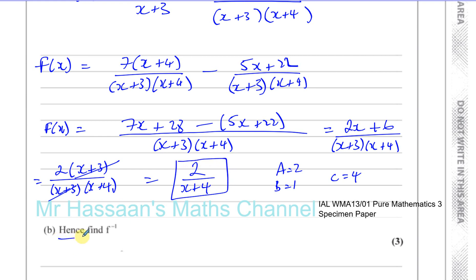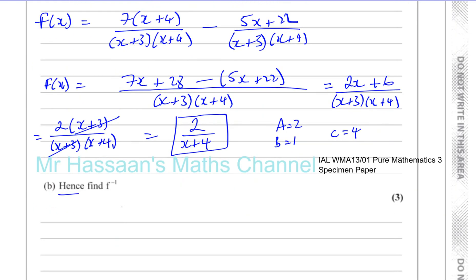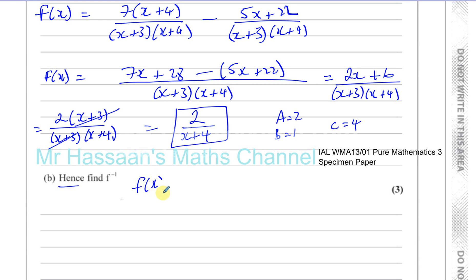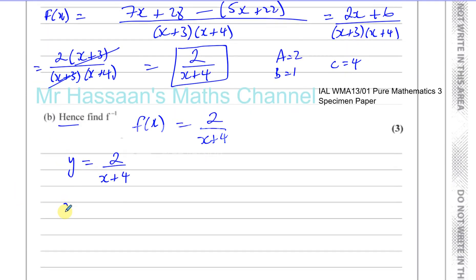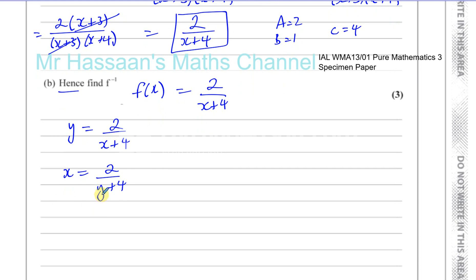Part B says hence find the inverse of f of x. Since 'hence' means using the result we found, we take f of x as 2 over x plus 4. To find the inverse algebraically, we let y equal 2 over x plus 4. When finding the inverse, x and y are swapped, so we rewrite it as x equals 2 over y plus 4. Rearranging to make y the subject, we cross-multiply to get y plus 4 equals 2 over x.